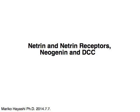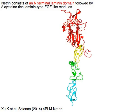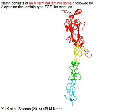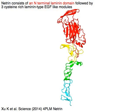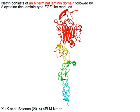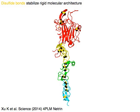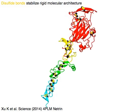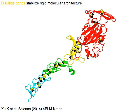Netrin and Netrin receptors: Neogenin and DCC. Netrin consists of an N-terminal laminin domain in red, followed by three cysteine-rich laminin-type EGF-like modules in yellow, green, and cyan. Disulfide bonds in yellow and black stabilize its rigid molecular architecture.